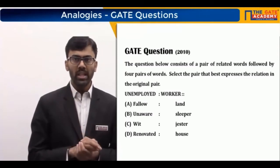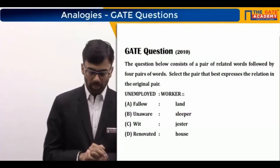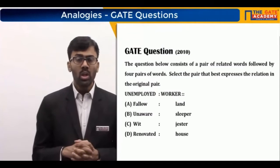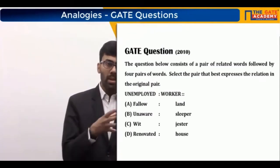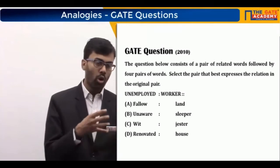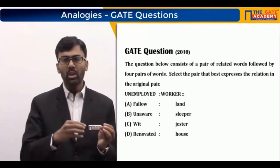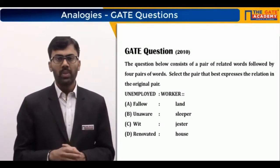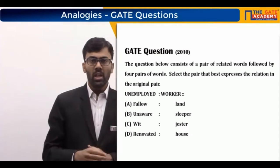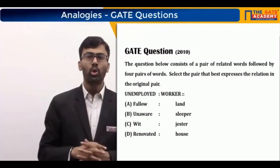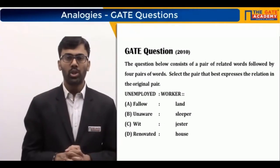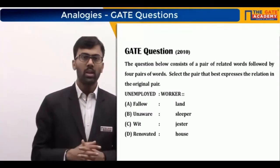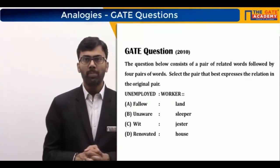Option D states 'renovated house.' A house can be renovated, old, or new. A renovated house is just one particular type of house. If the option had said 'unoccupied house' — meaning a house not being put to use — it would have been close to the original relationship. But 'renovated' does not capture that meaning, so option D does not work.